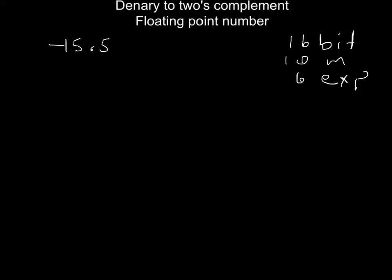So again, the first thing I'm going to do is convert the absolute value of the decimal to a fixed-point binary number. For 15.5, it turns out I will have 1111 binary point 1. So that is my absolute value — meaning I'm ignoring the negative for now.